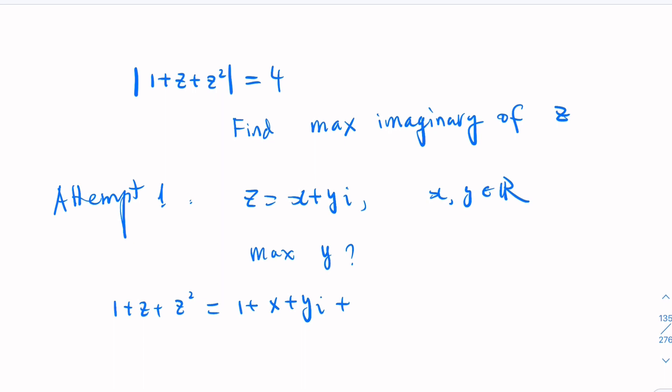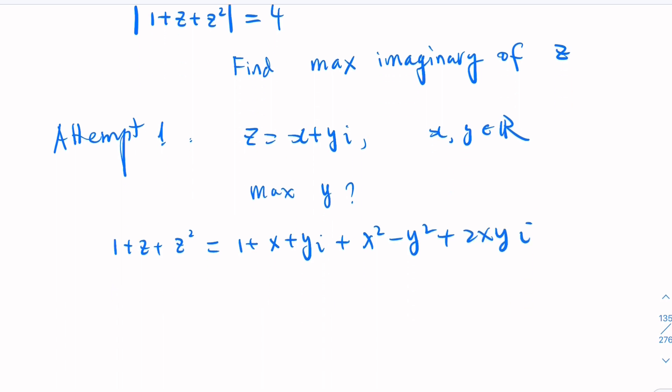Plus z squared here that would be x squared minus y squared plus 2xy i. And the modulus of this, 1 plus z plus z squared, would equal to the real part 1 plus x plus x squared minus y squared. Then square root of 1 plus x plus x squared minus y squared squared plus.